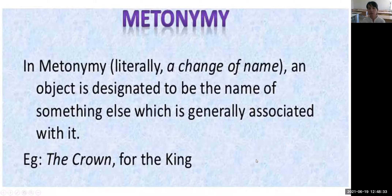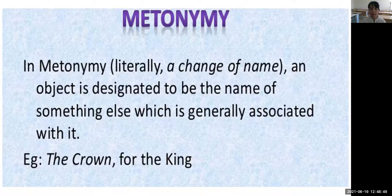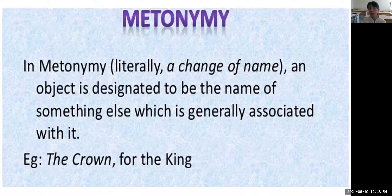Metonymy. Metonymy is based on association, not resemblance. In metonymy — literally 'a change of name' — an object is designated by the name of something else which is generally associated with it. Metonymy is renaming something according to its association. In our common speech, we use a lot of metonymy.